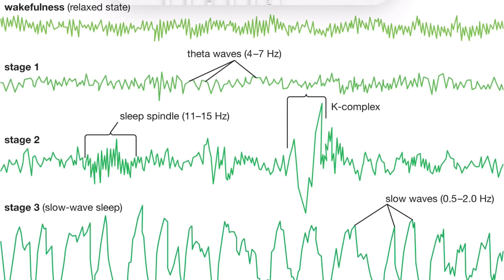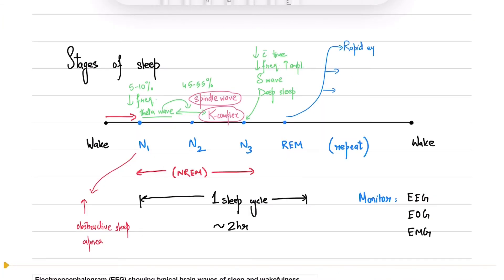The EEG for all stages can be confusing, so here's a comparative image of all of them. REM sleep has three characteristics which are monitored by EEG, EMG, and EOG. You'll see a low voltage mixed pattern; saw tooth waves are seen in this stage. Rapid eye movements will be seen by the EOG. EMG will register atonia throughout the body except for the diaphragm and extraocular muscles. Atonia is due to direct inhibition of alpha motor neurons.